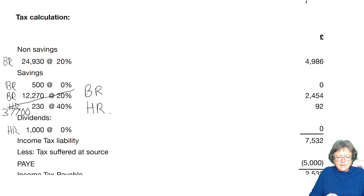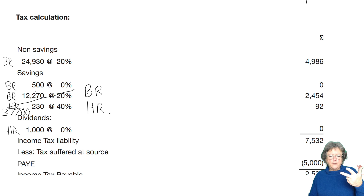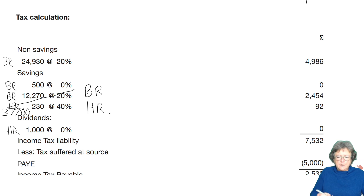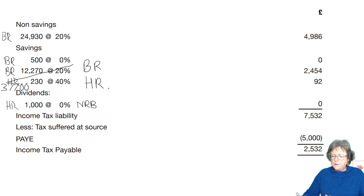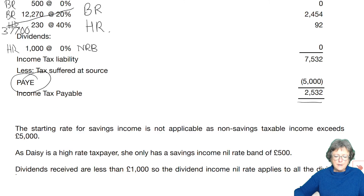The savings income is split into three. The first £500 — because she's a high rate taxpayer — is the nil rate band. There's no starting rate because she has non-savings income above the threshold. £12,270 is at basic rate, and the final £230 is at high rate at 40%. The dividend — again, that's the nil rate band, clearly shown. Tax liability of £7,532, with PAYE deducted at source of £5,000, so she has to pay £2,532. At the bottom of the model answer, you'll see the notes that go with that.